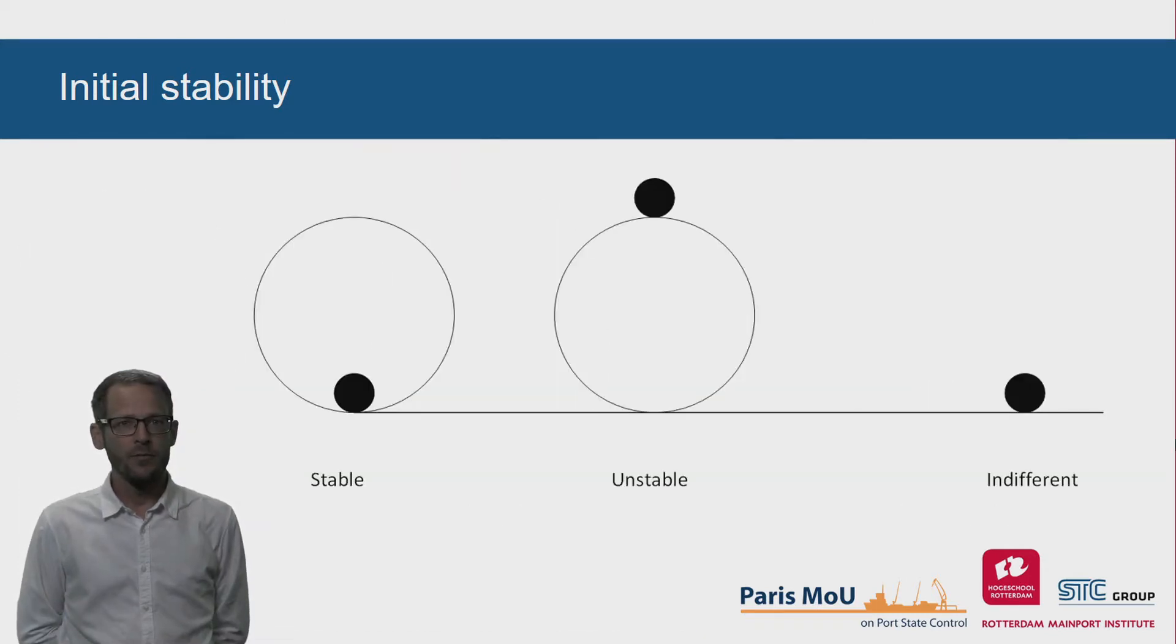For the initial stability, we have three possibilities. The ship is stable, unstable or indifferent. When shortly disturbed, a stable situation will return to its original position. An unstable situation will change further when slightly disturbed. And an indifferent situation will remain in the disturbed position when the disturbing force is removed.